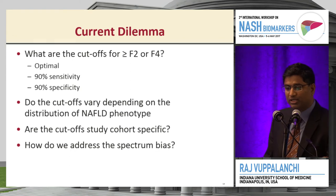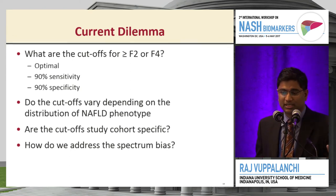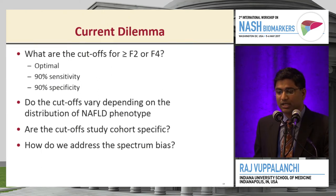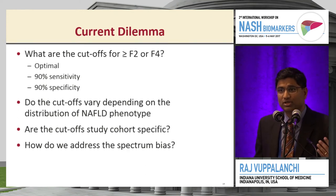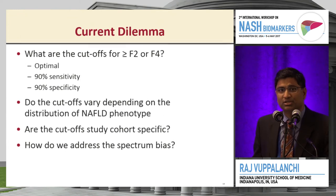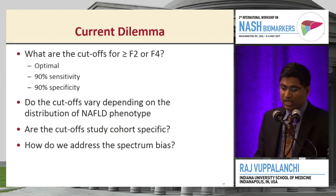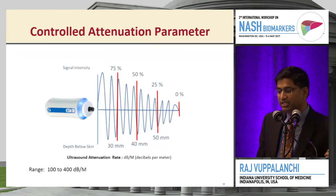The key questions are: what are the cutoffs for F2 or greater and F4, since these are clinically significant and used as enrollment criteria for therapeutic clinical trials? Should we pick cutoffs based on 90% sensitivity or 90% specificity? Do these cutoffs vary depending on the distribution of NAFLD phenotype, and how do we address spectrum bias? For hepatitis C trials, the FDA intervened to require at least 20% cirrhotics in study cohorts. Perhaps similar thinking needs to apply to biomarker development — what kinds of patients are being included?